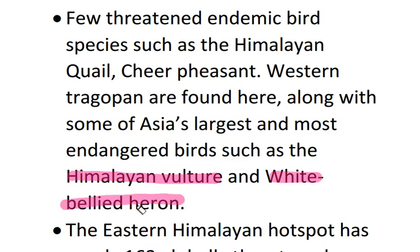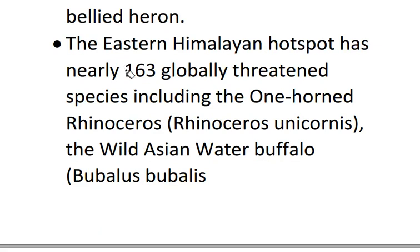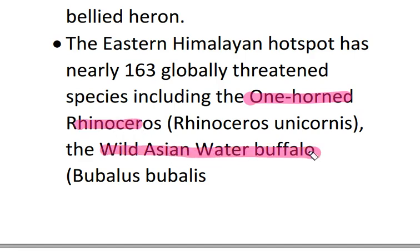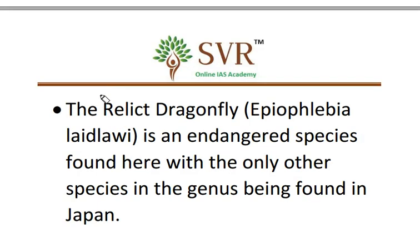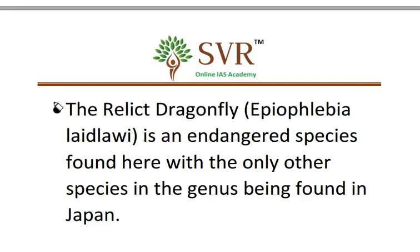Some of Asia's largest and most endangered birds are also found here, such as the Himalayan vulture and white-bellied heron. The Eastern Himalayan hotspot has nearly 163 globally threatened species, which includes the one-horned rhinoceros and wild Asian water buffalo. As already discussed, two-horned rhinoceroses are found in Africa whereas one-horned rhinoceroses are found in Asia. In the Eastern Himalayan region, the relict dragonfly is found — an endangered species whose only other population is found in Japan. So far we have discussed the endemic flora and fauna of the Eastern Himalayan region.